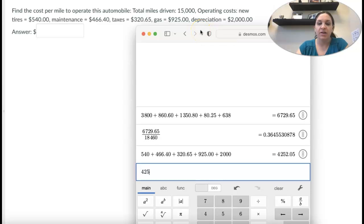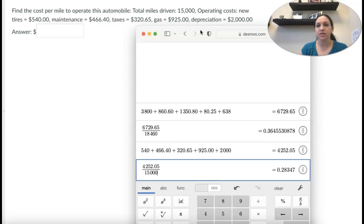So we want to take that value what we just got and divide it by how many miles, which is 15,000 right here. So 0.283.